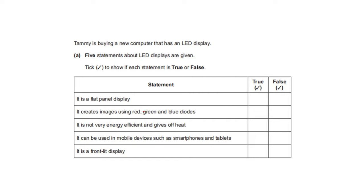Tammy is buying a new computer that has an LED display. Five statements about LED displays are given — tick to show if each is true or false. It is a flat panel display — true. It creates images using red, green, and blue diodes — true. It is not very energy efficient and gives off heat — false; it is energy efficient and gives off less heat. It can be used in mobile devices such as smartphones and tablets — true. It is a front lit display — false.